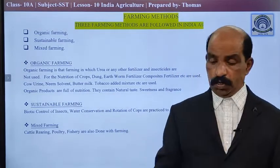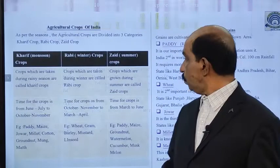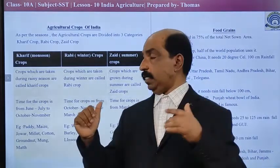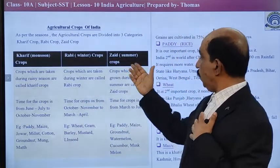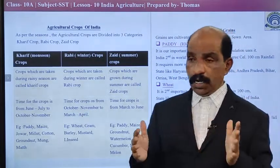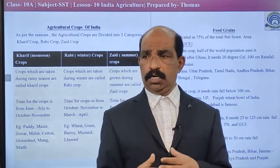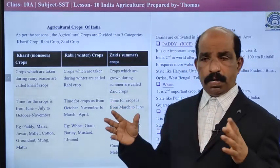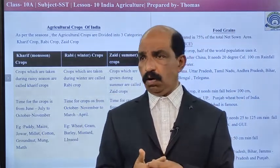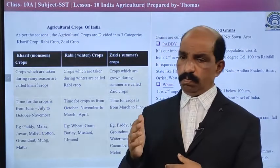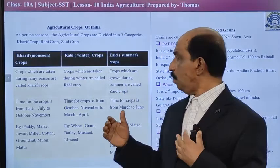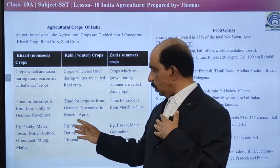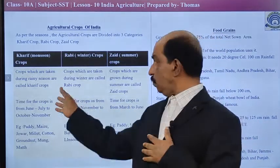Now let us talk about some important crops of our country. Our crops are of three varieties. We call them Kharif crop, Rabi crop, and Zaid crop. Kharif crop is cultivated in the rainy season. We are getting rainfall from June to September, so we cultivate from June to November. Whatever crop we cultivate in this time, we call it Kharif crop or monsoon crop. Rain is the main support for the farmers. Paddy, maize, jowar, millet, cotton, groundnut, mug, etc. are Kharif crops.